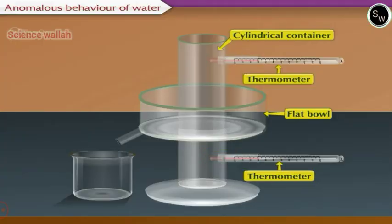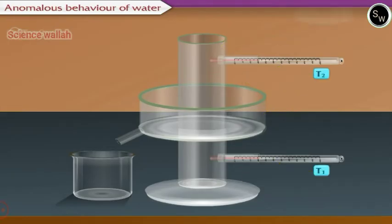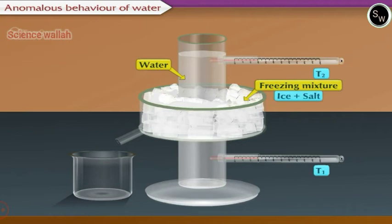The thermometer attached below the flat bowl measures the temperature T1 while the thermometer attached above measures the temperature T2. The cylindrical container is filled with water and the flat bowl is filled with the freezing mixture of ice and salt.